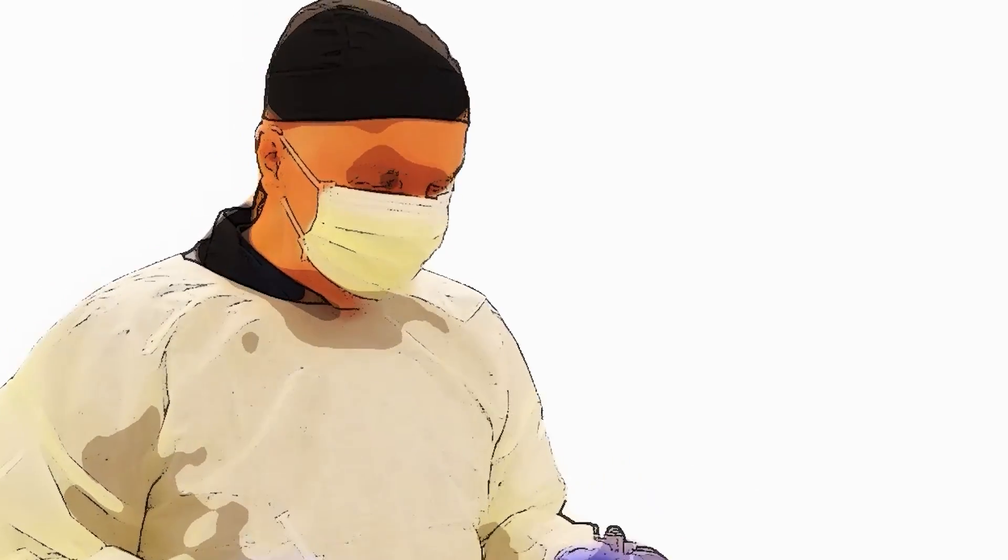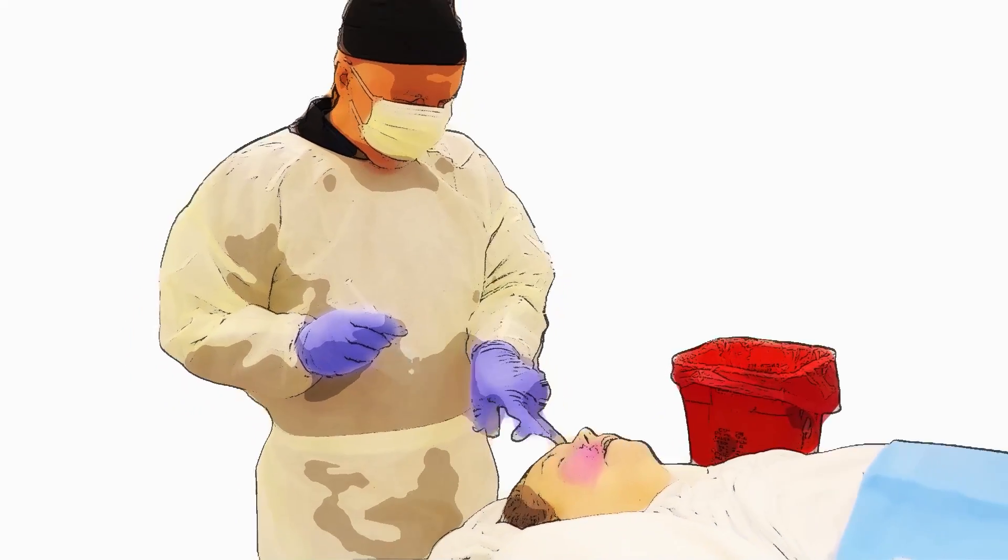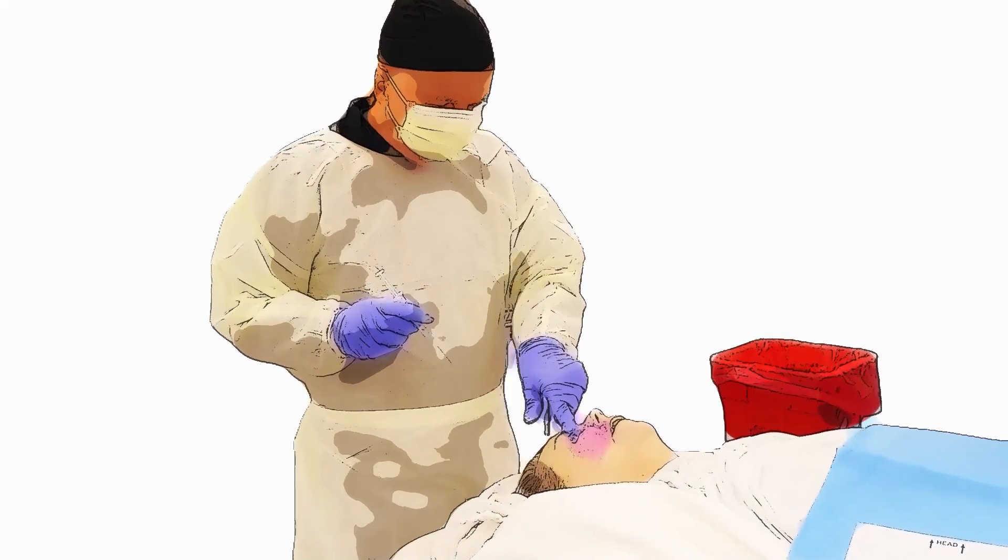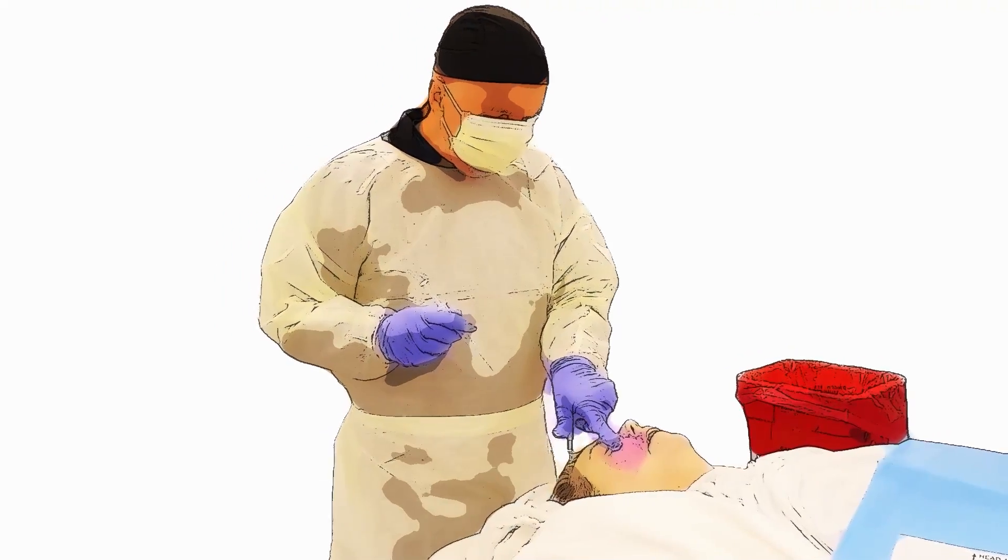I'm going to do the infraorbital nerve block. There's two ways of doing it. You can do it externally - you have the infraorbital ridge here and you can actually feel the foramen right here.